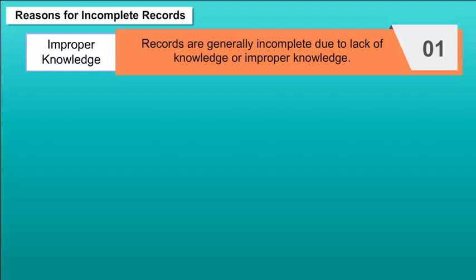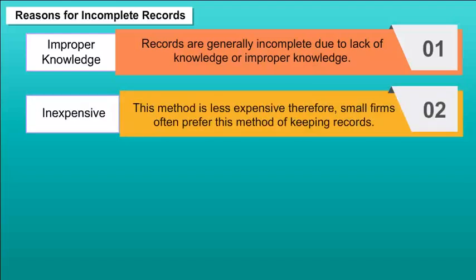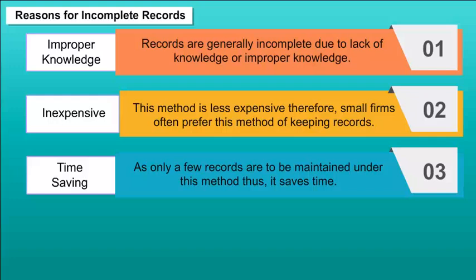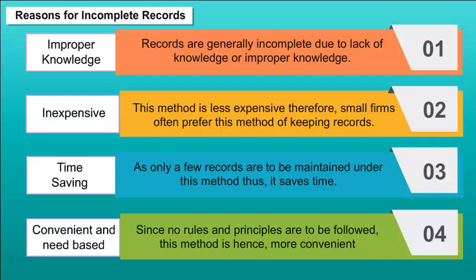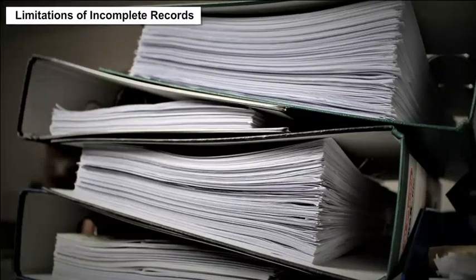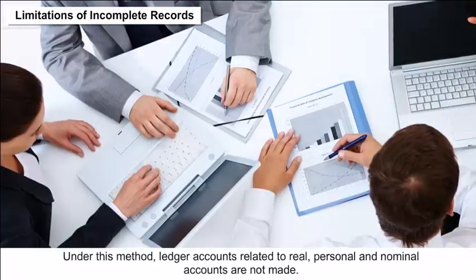Reasons for incomplete records: Records are generally incomplete due to lack of knowledge or improper knowledge. This method is less expensive, therefore small firms often prefer it. As only a few records are to be maintained, it saves time. Since no rules and principles are to be followed, this method is more convenient, and firms adapt different techniques of recording transactions based on their needs.